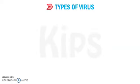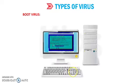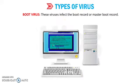Now we will discuss the types of viruses. Different types of viruses can be classified by infection targets. The first type is boot virus. These viruses infect the boot record — which is why they are named boot viruses. They infect the boot record or master boot record.